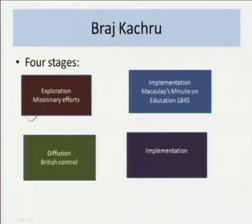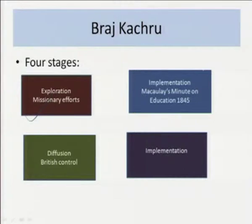So what are the four stages? The four stages are: first, the exploratory stage beginning with the missionaries; then the phase of implementation coming with Macaulay's famous Minute of 1835; followed by the diffusion of British control; and finally the implementation of their policies. This is how the beginning and growth of English in India is to be seen, along with socio-political and evangelist developments.